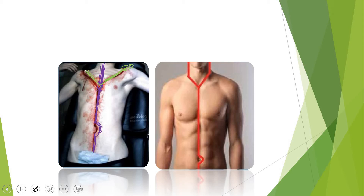Certain forensic pathologists prefer a unique approach — a modified Y incision — where they take the incision from the manubrium of the sternum all the way to the mastoid process, the back side of the ear. The reason we moved from the I-incision to the Y-incision is that in the I-incision the structures of the neck are not well exposed and the thoracic cavity cannot be studied as efficiently as with the Y-shaped incision.